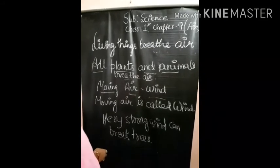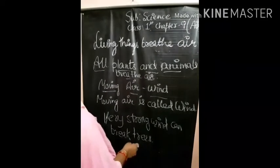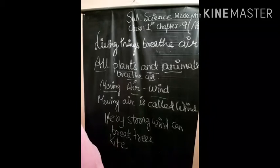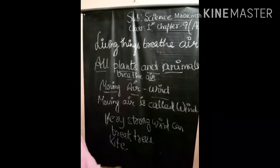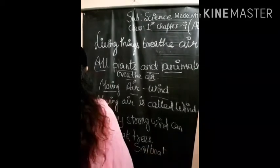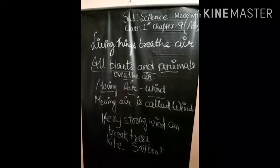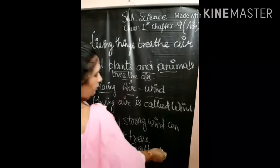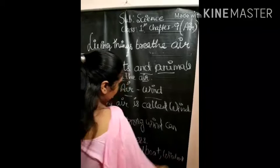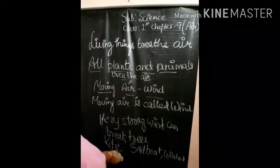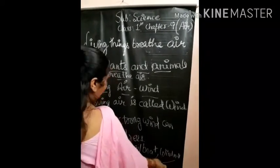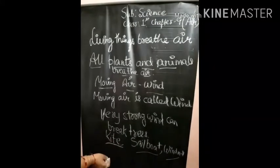Wind helps sailboat to move. Strong wind turns the arms of a windmill. Wind makes the kite, sailboat and windmill move.